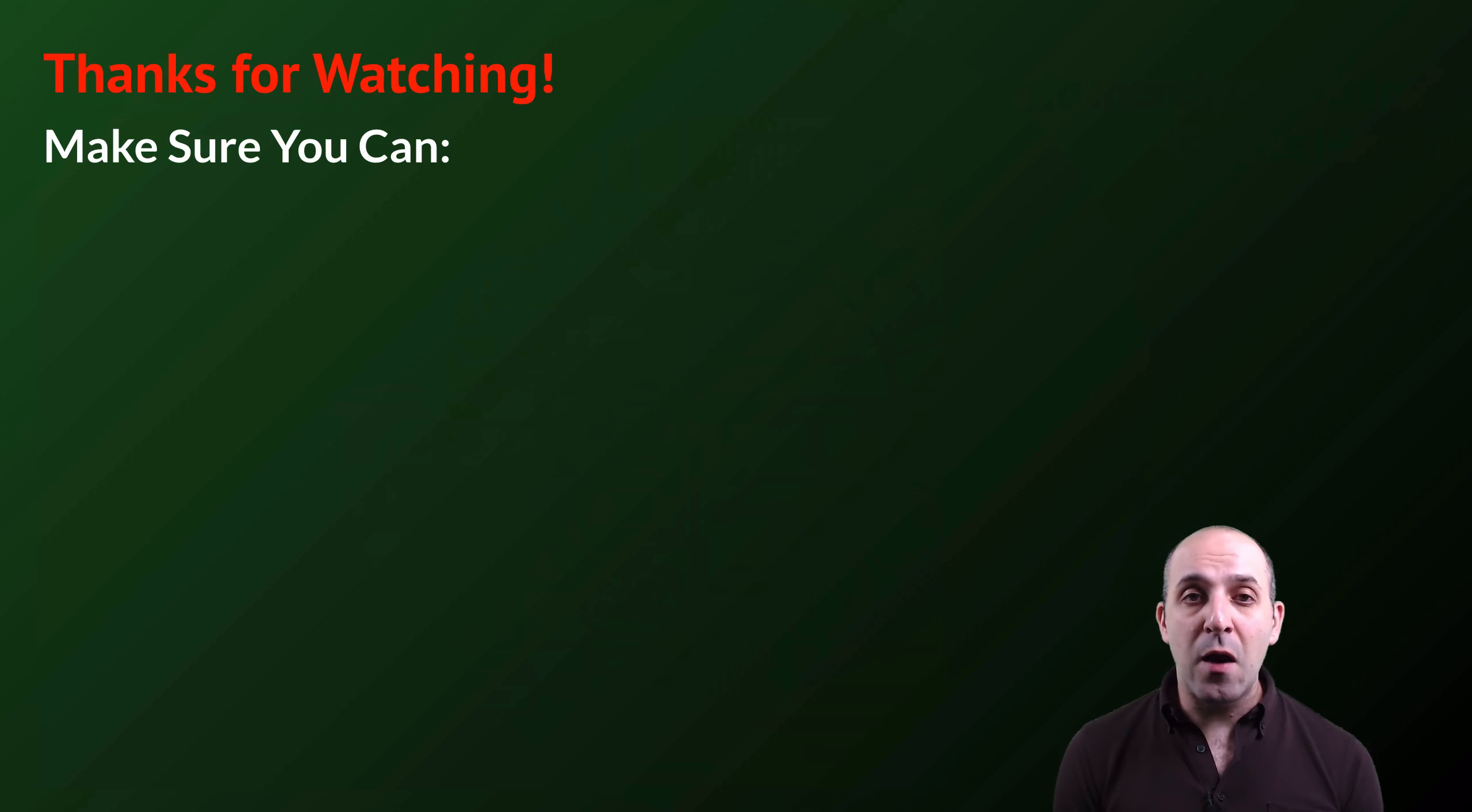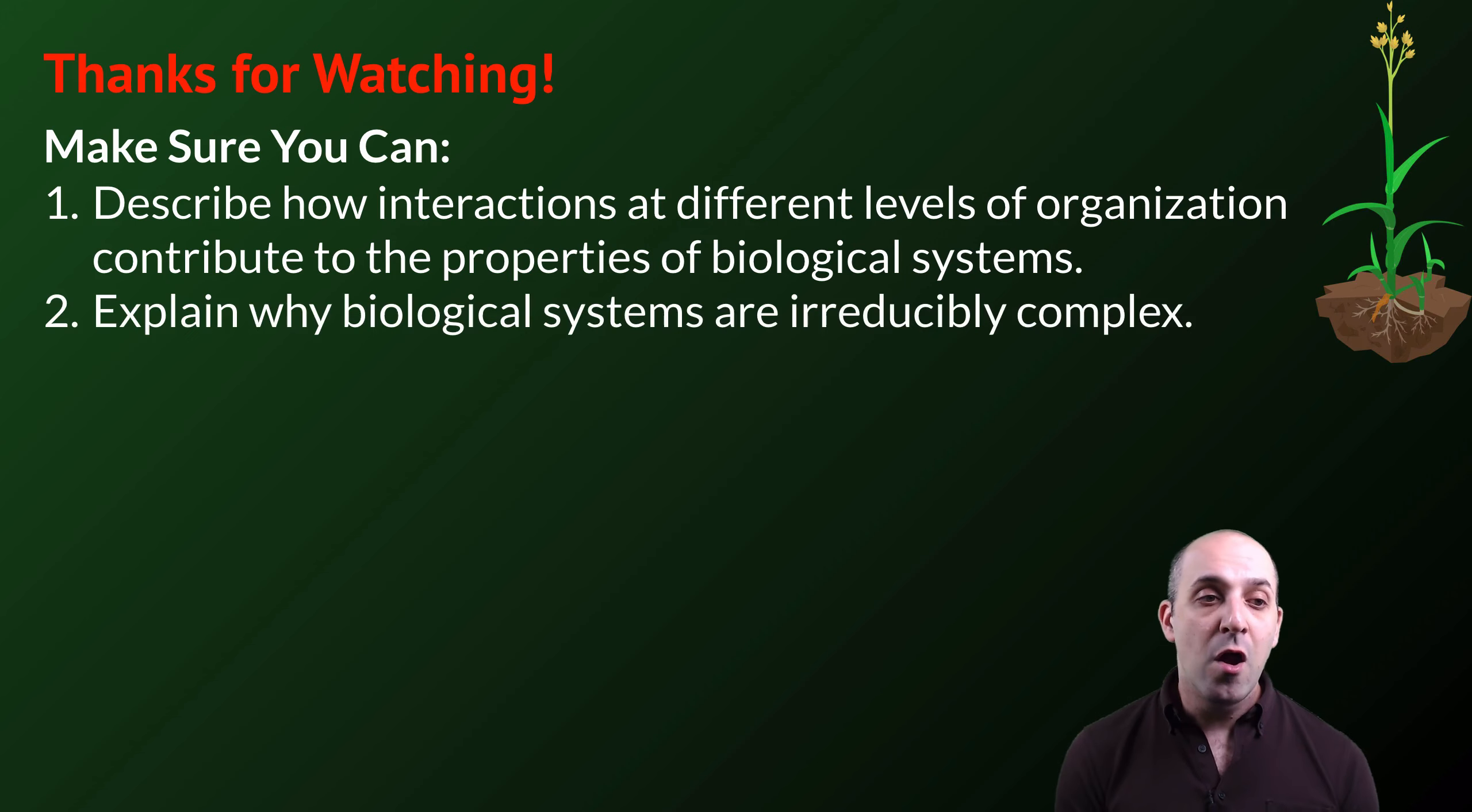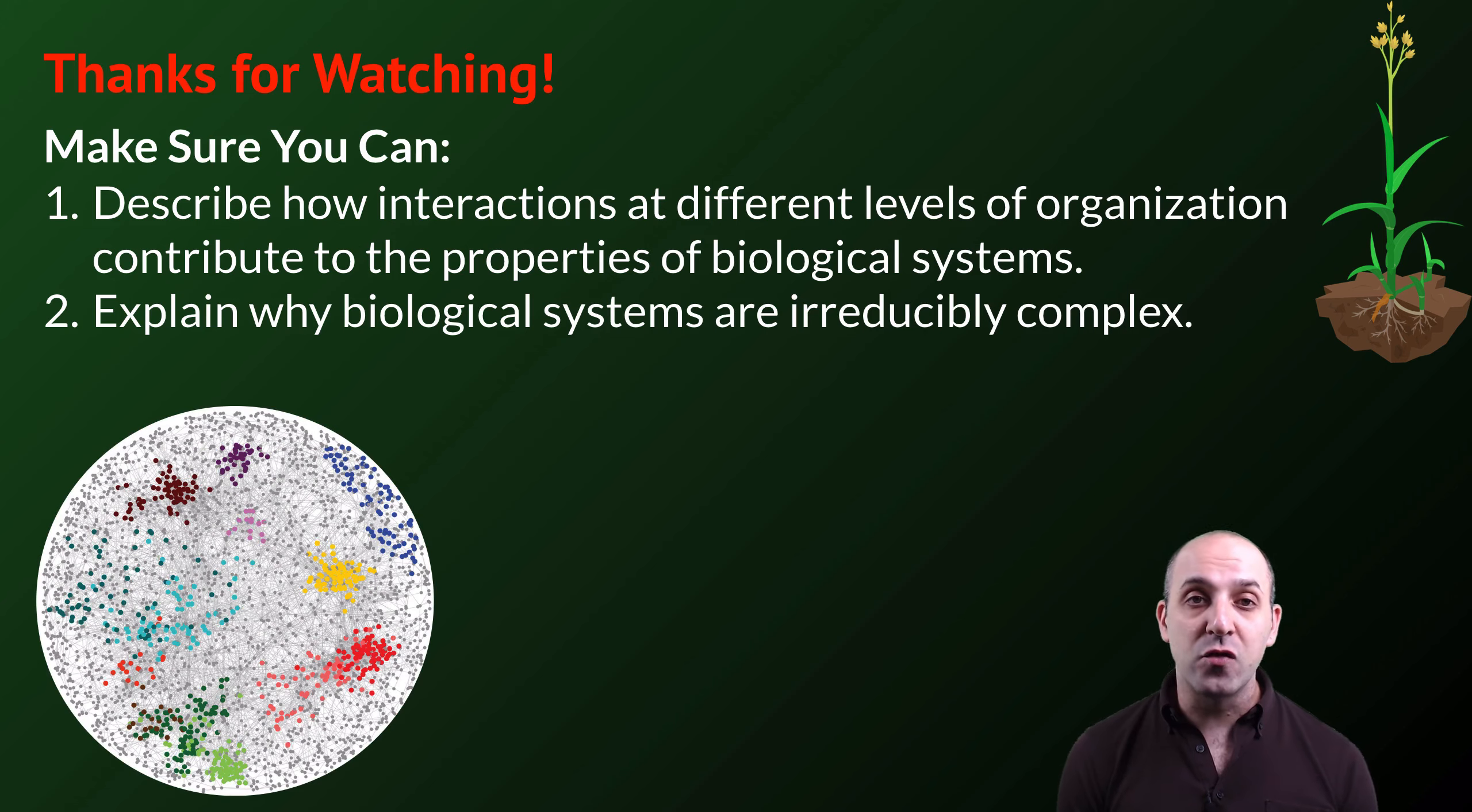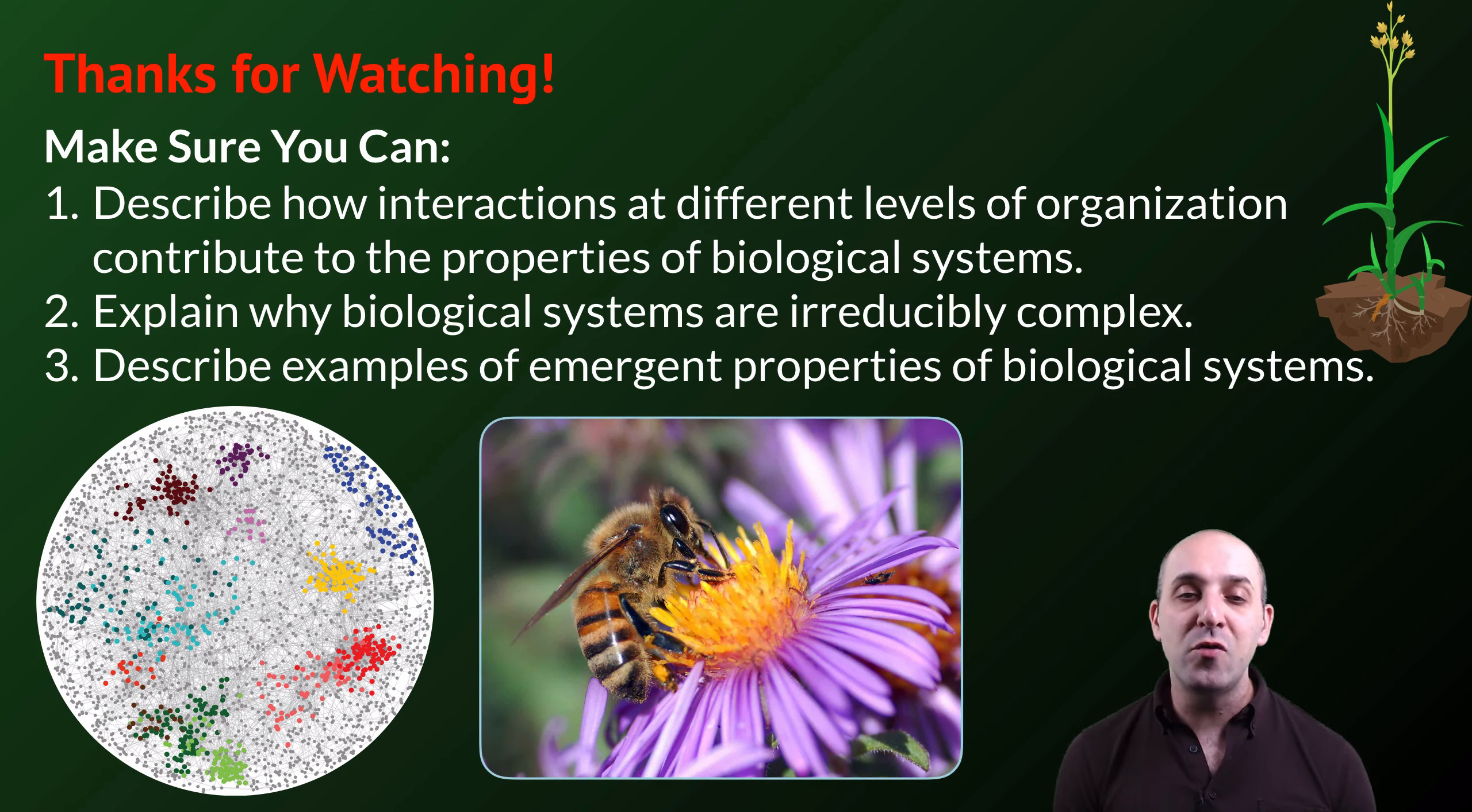Thanks so much for watching our introduction to biological systems thinking. Make sure you can do the following things here at the end. Make sure that you can describe how interactions at different levels of organization contribute to the properties of biological systems. Make sure that you can explain why biological systems are irreducibly complex. And finally, make sure that you can describe examples of emergent properties that we see in biological systems. If you can do those things, you're doing great. If not, that's okay too. Take a moment and write down any questions that you have so that you can get the answers that you need. Thanks again for watching. I really appreciate it. Have a great day.